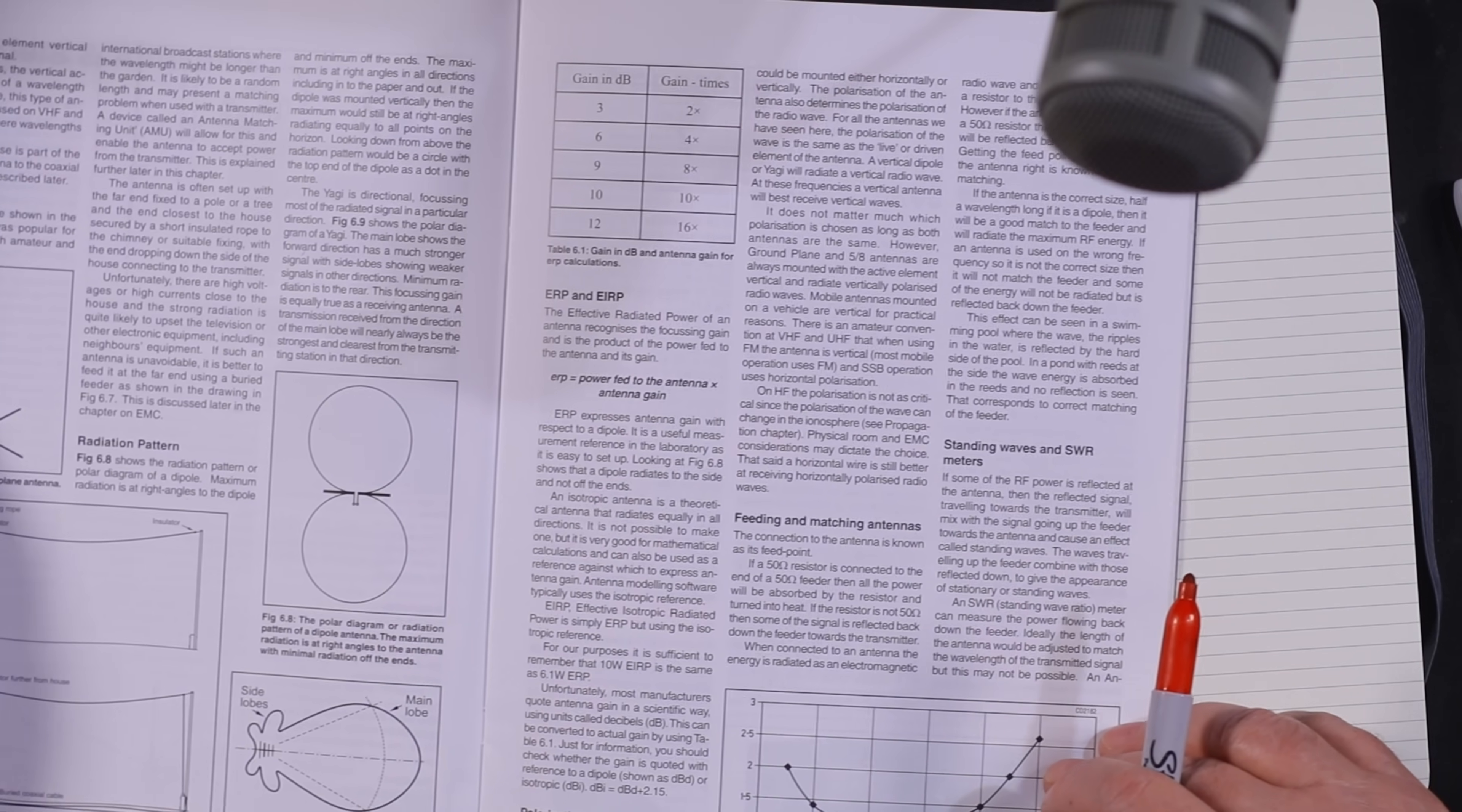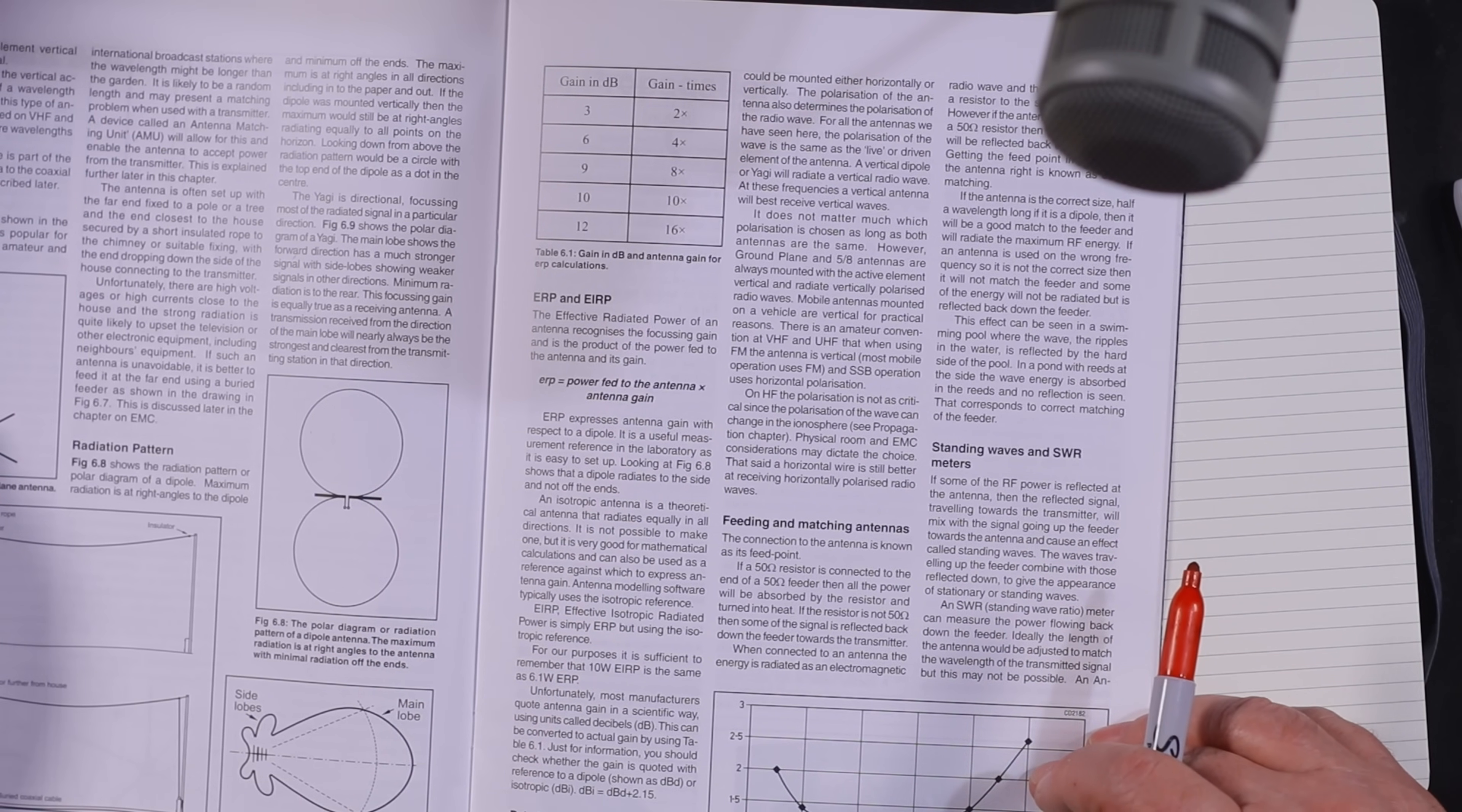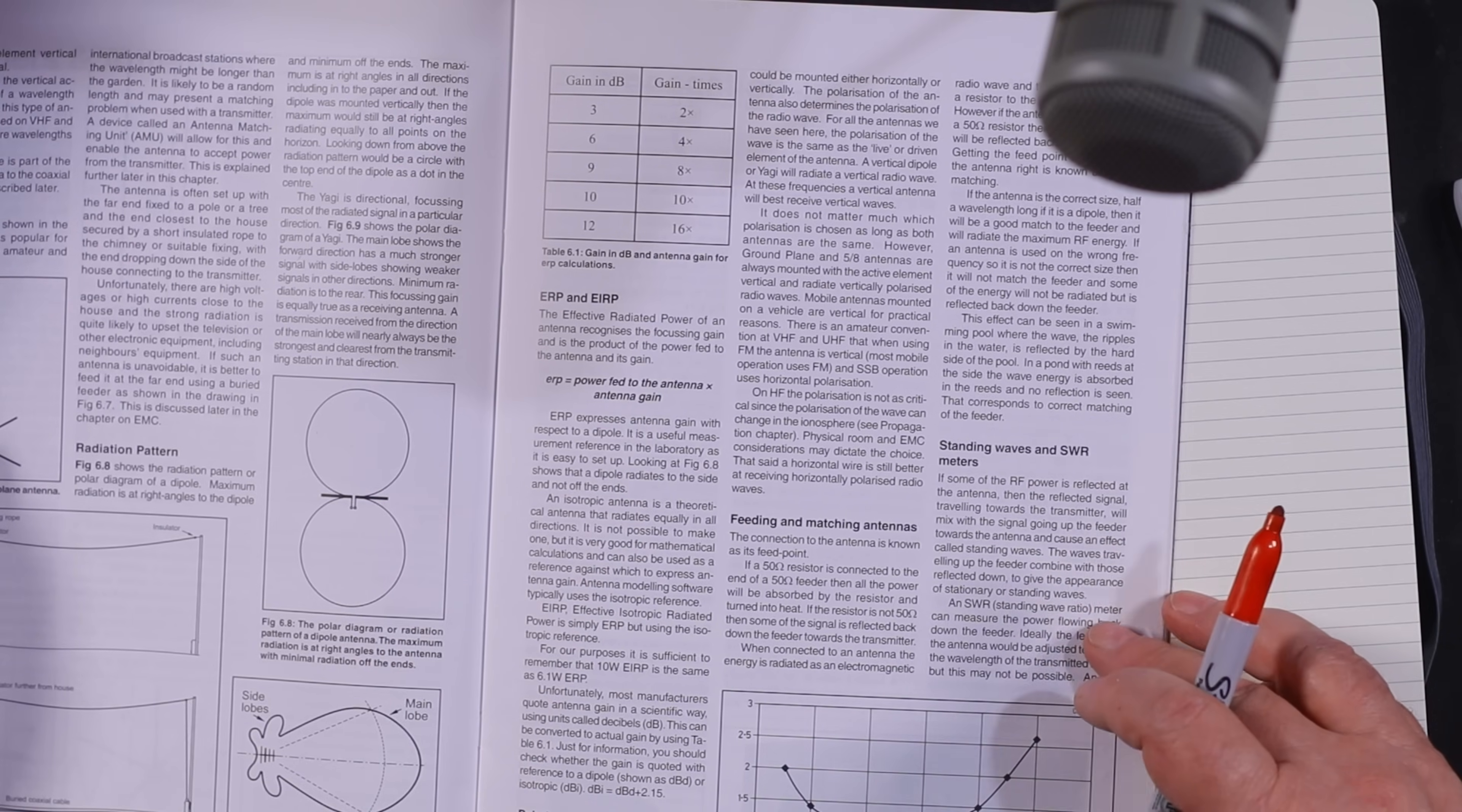If the antenna is the correct size, half a wavelength long, it'll be good match the feeder and radiate maximum energy.